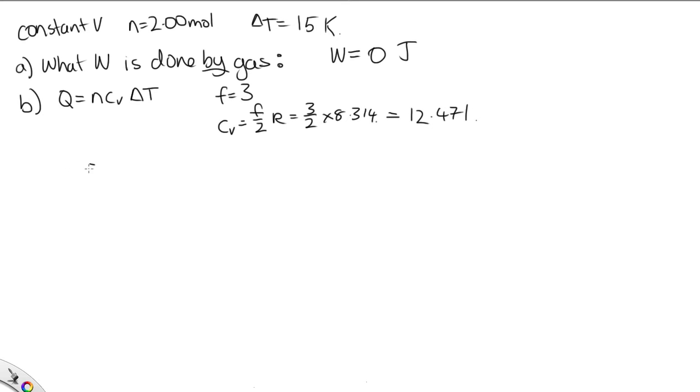So Q is equal to 2.00, that's n, times this 12.471, times the change in temperature, which is the 15. Solving that, we end up with 374 joules of heat is added to the system.